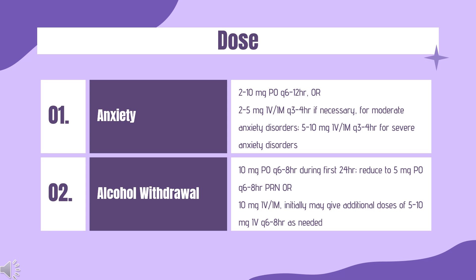Adolescent or adult weight-based intranasal dosing: 14–27 kg: 5 mg (one 5 mg device), 1 spray in 1 nostril. 28–50 kg: 10 mg (one 10 mg device), 1 spray in 1 nostril. 51–75 kg: 15 mg (two 7.5 mg devices), 1 spray in each nostril. Greater than or equal to 76 kg: 20 mg (two 10 mg devices), 1 spray in each nostril.